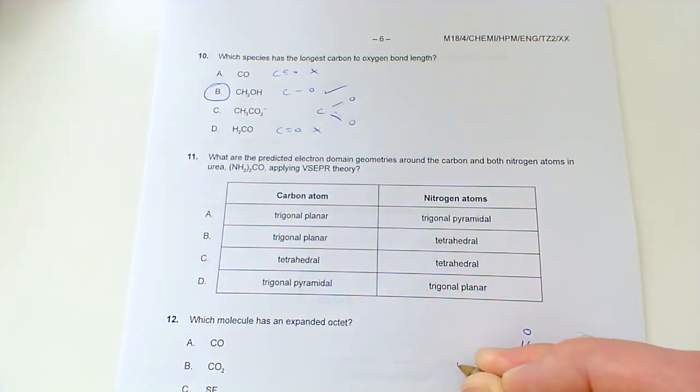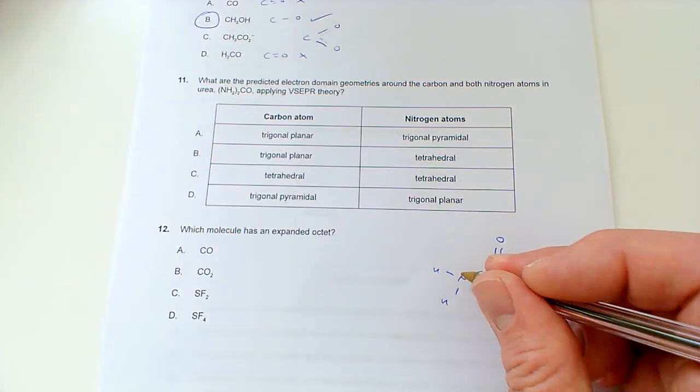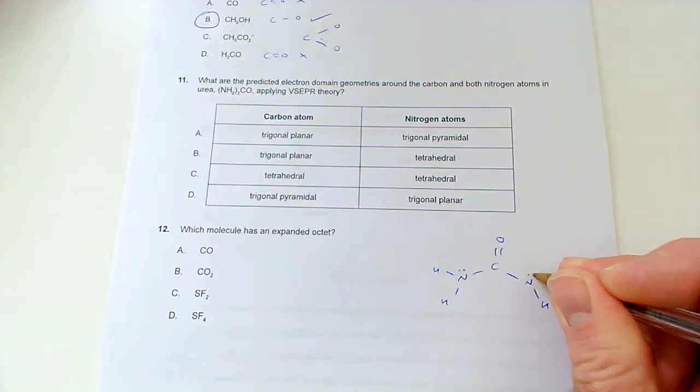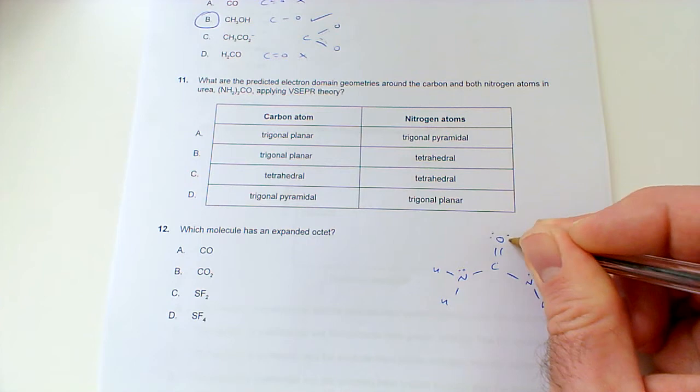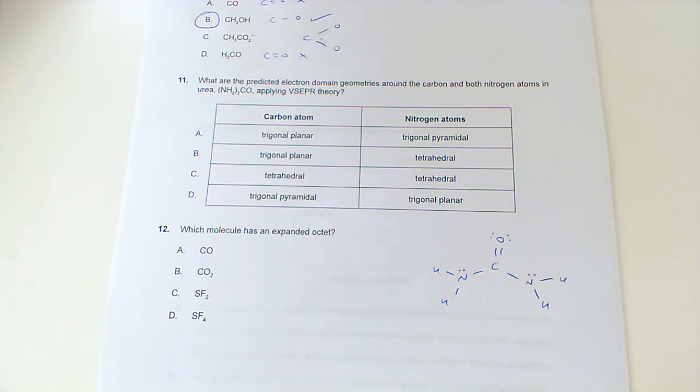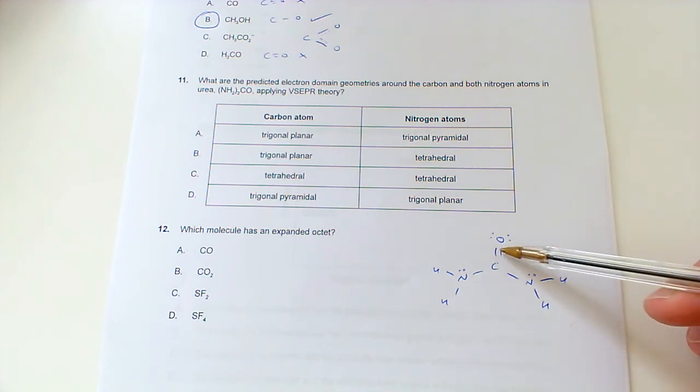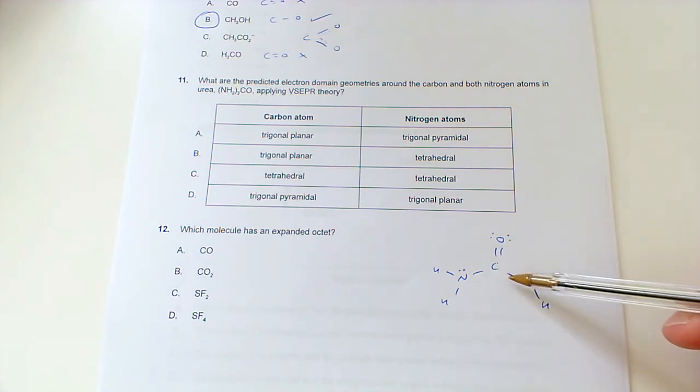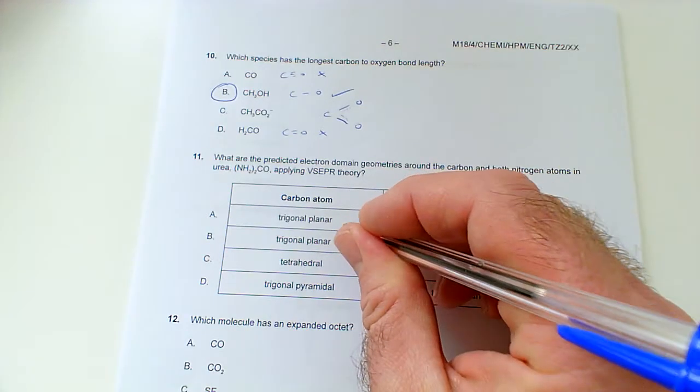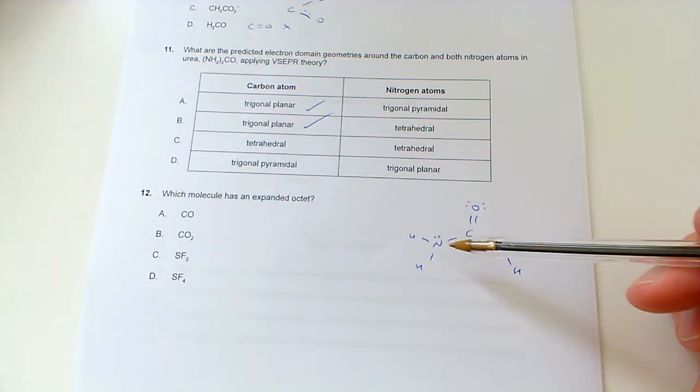There are lone pairs of electrons here and also on the oxygen there as well. So the electron domain geometry around this carbon atom: we've got one, two, three electron domains. A double bond is counted as one, there's no lone pair, so that would be trigonal planar.